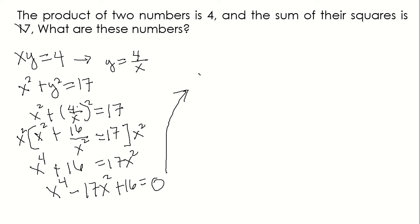This equation, x to the 4th minus 17x squared plus 16 equals 0, can be factored.